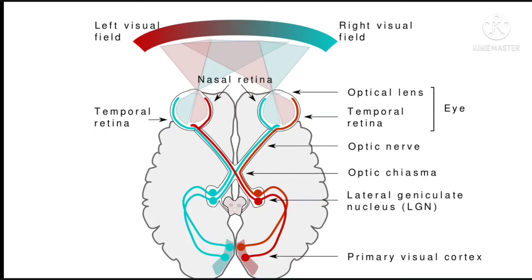Temporal side ke, yani outer side ke fibers — dono optic nerves ke jo outer side ke fibers hain — woh cross nahi karti hai, aur apni apni side par hi aage badh jaate hai. So what this effectively does, it actually takes both the visual fields to go to the opposite side of the brain. Red color ki left visual field se aane wali rays left eye ke nasal side pe hit ki, jo optic chiasma ke level pe decussate ho gayi, aur right visual cortex mein pahunch gayi. Aur iski kuch rays jo right eye ke temporal side ko hit kar rahi thi, woh rays chiasma se seedhe hi right cortex mein chali gayi. Toh ultimately sari left visual field ki rays right visual cortex mein pahunch gayi. Aur isi tarah sari right visual field ki rays left visual cortex mein pahunch gayi.